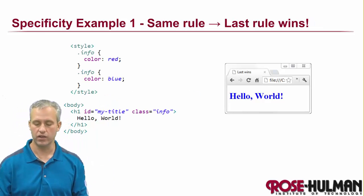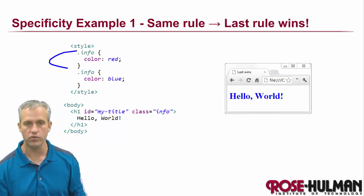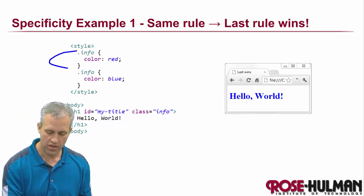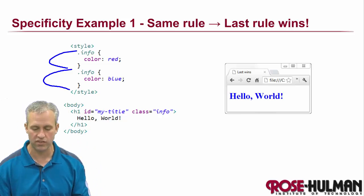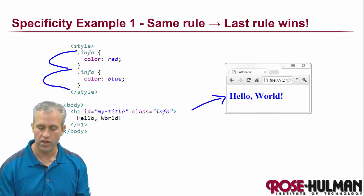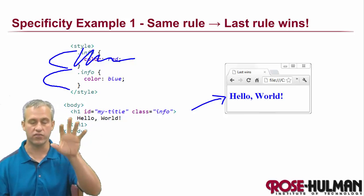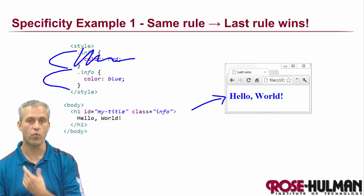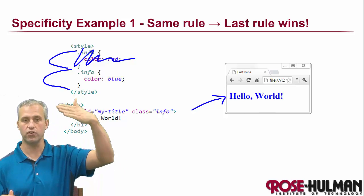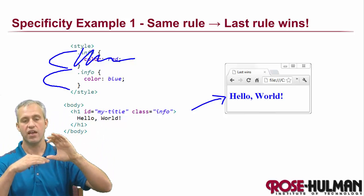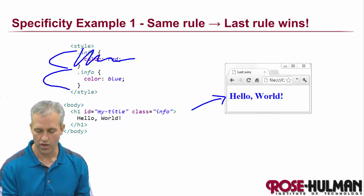The first rule: if things have the same weight or the same type of rule, whoever is last wins. This is actually important. If you're using a framework like Bootstrap, you load their stuff first and then load your stuff second. If you make a rule and they make a rule, your stuff will win — which is maybe what you want.